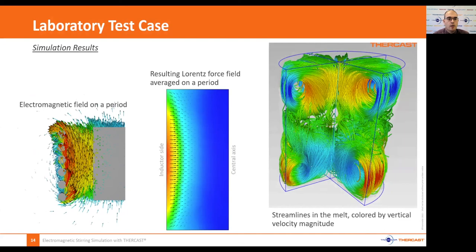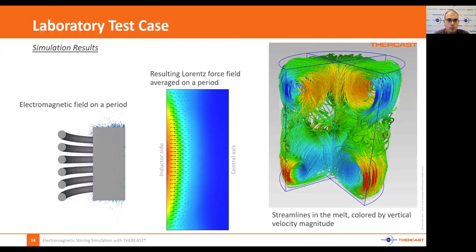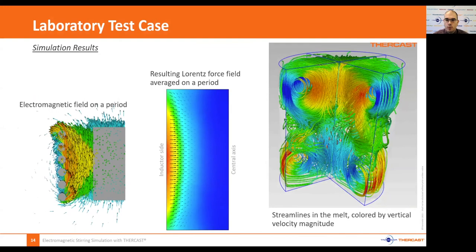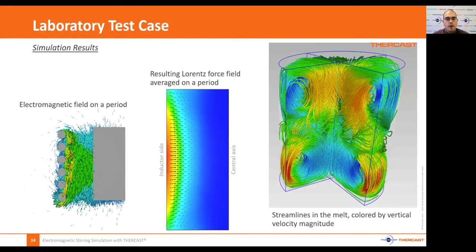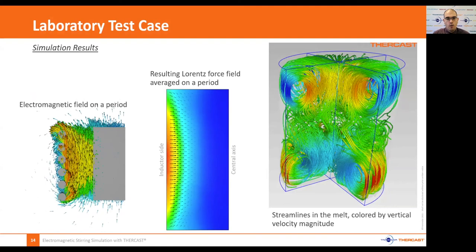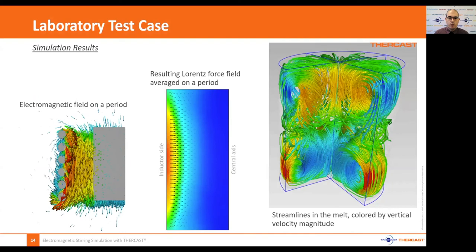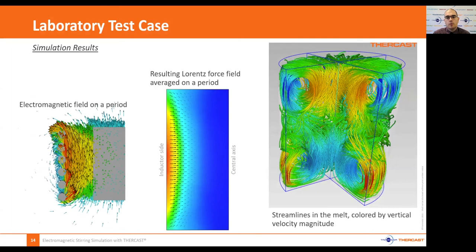Here are the results on this case. On the left you can see a visualization of the magnetic field from the EM solver, going one way then the other for each electromagnetic period. I'm then showing the average Lorentz force over an EM period with arrows indicating direction and color indicating magnitude. There is strong magnitude on the wall on the inductor side, decreasing quickly, with maximum magnitude at mid-height, leading to a flow that takes fluid from the edge to the center and then recirculates above and below.